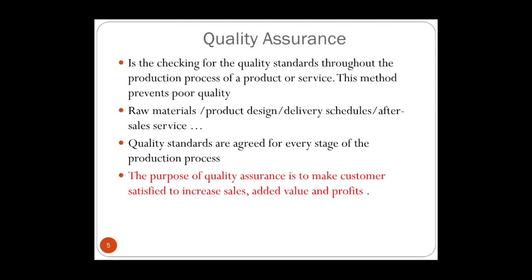Quality assurance is not a traditional way. Quality assurance is checking quality standards throughout the production process — at each and every stage there will be people checking the quality of goods. The business will have quality standards from the beginning, even before they start producing, starting with the raw materials they buy until the finished product is sold. From raw materials, to design, to scheduling, to after-sales service — all these stages will have quality standards. In quality assurance, everyone is involved, not only inspectors at the end. Its purpose is mainly to make customers satisfied and to increase sales, added value, and profit.